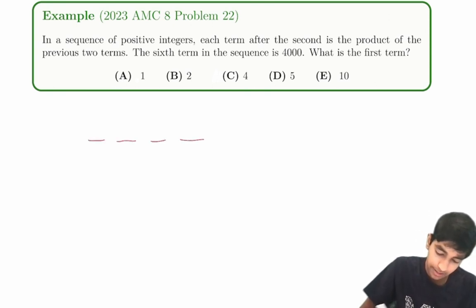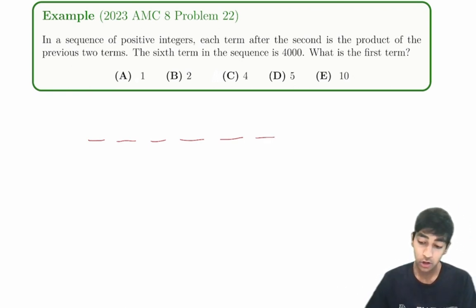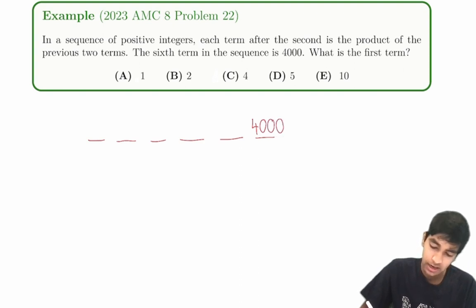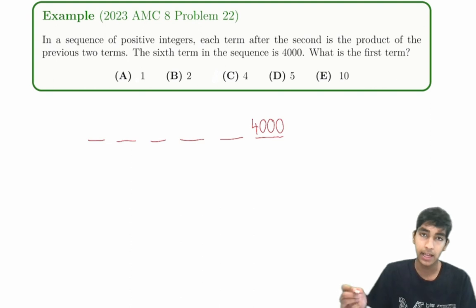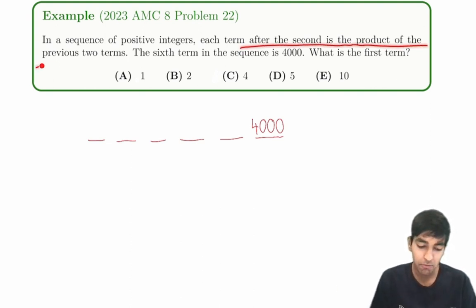So we've got a sequence, four, five, six terms. The sixth term is 4,000. And we've got this kind of unique condition. If you've heard of arithmetic and geometric before, this is nothing like it. Each term after the second is the product of the previous two terms.